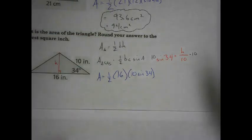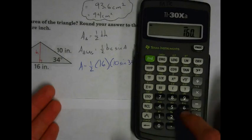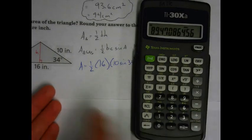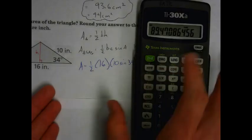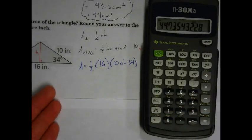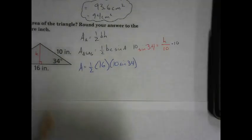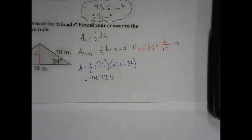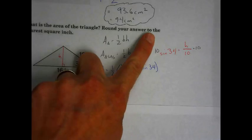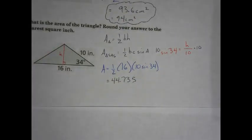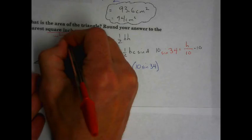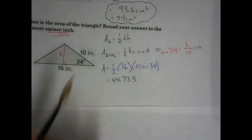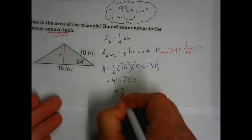We punch in: 16 times 10 times the sine of 34, all in the numerator, then divide by 2 at the very end. That gives us 44.735. Reading carefully — round to the nearest square inch, which is the nearest whole number — so the answer is 45 square inches.